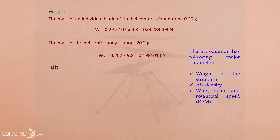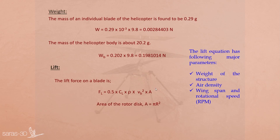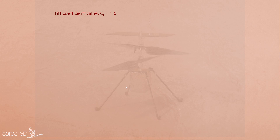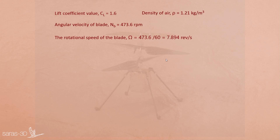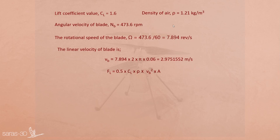The lift force on a blade is given by the lift equation. The area A is the area of the total rotor disc, given by A = πR², where R equals 6 centimeters. The lift coefficient Cl is assumed to be 1.6, a typical value. Density of air is taken as 1.21 kg/m³. The angular velocity of the blades is 473.6 RPM. The linear velocity is derived from the rotational speed, and hence the lift force is computed.